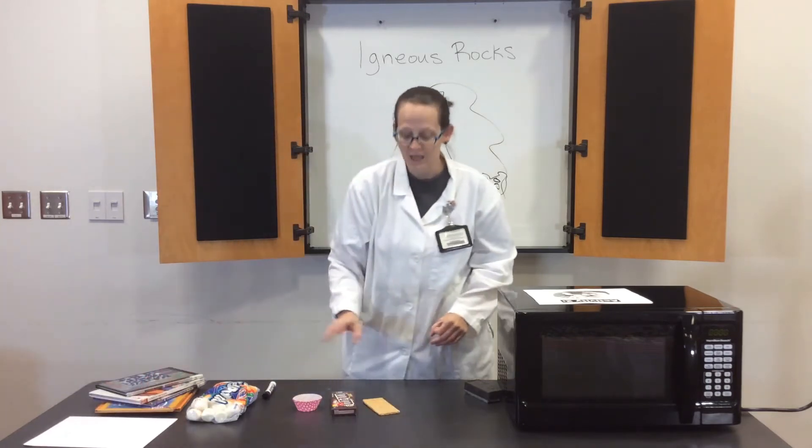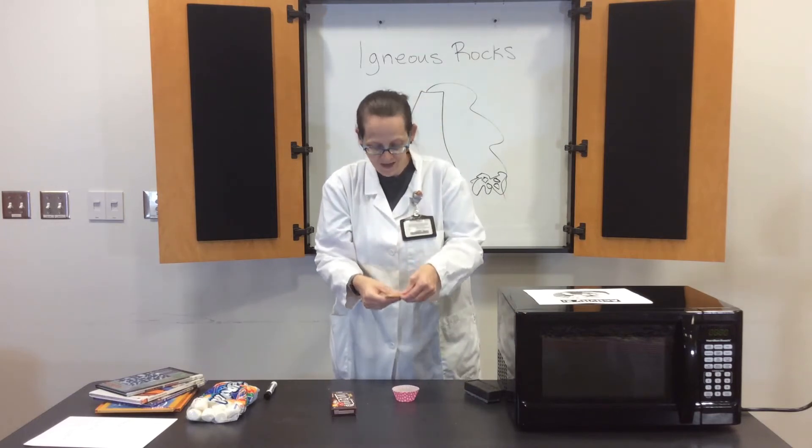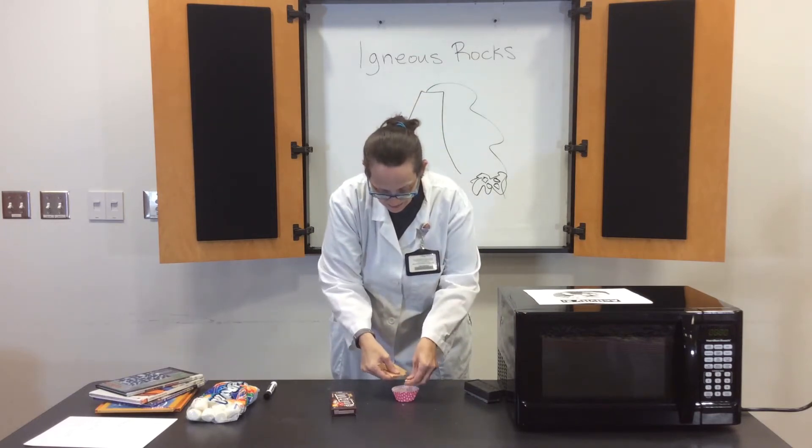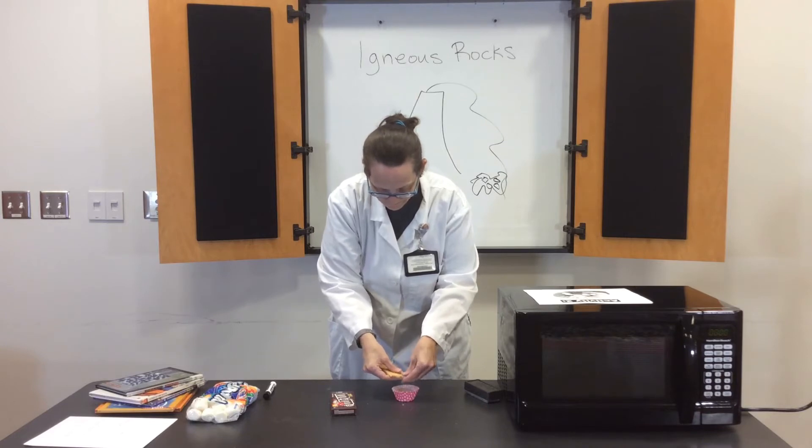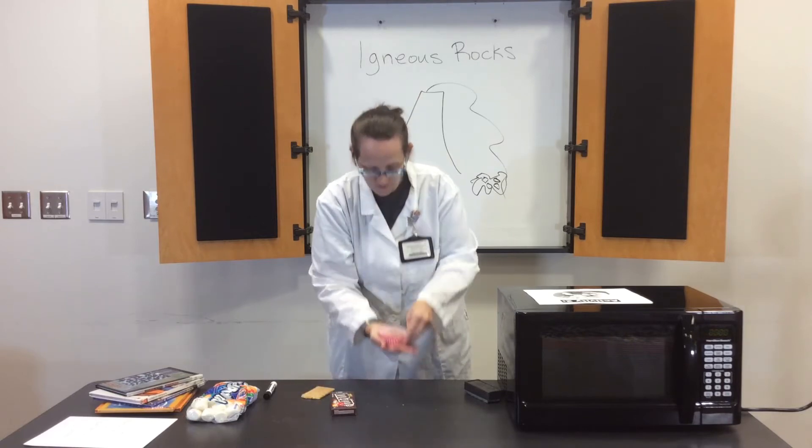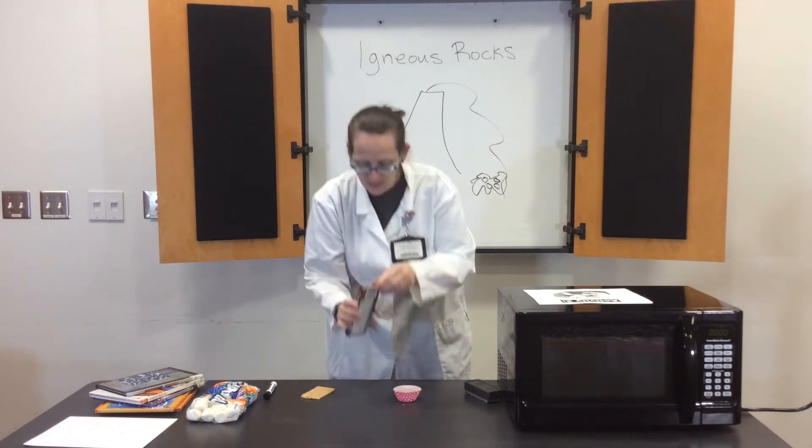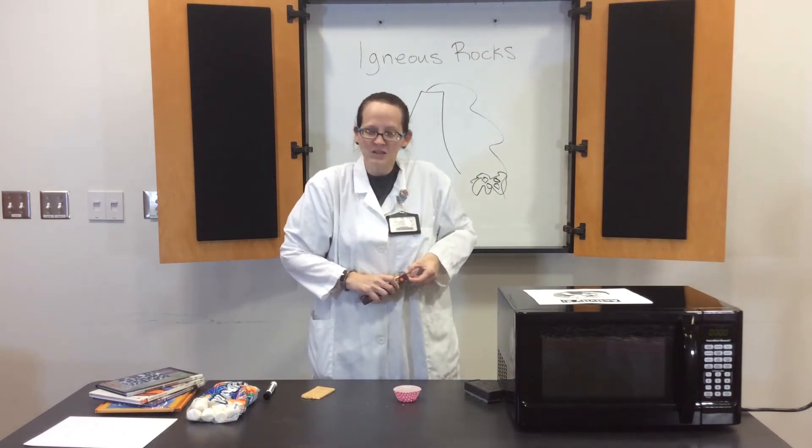So how we're going to show you that in this experiment is you're going to have different rocky elements. That's where your graham cracker comes in. You're just going to kind of smash up your graham cracker so you'll have little bits of graham cracker here in your cupcake holder. Those represent rocks and different minerals.